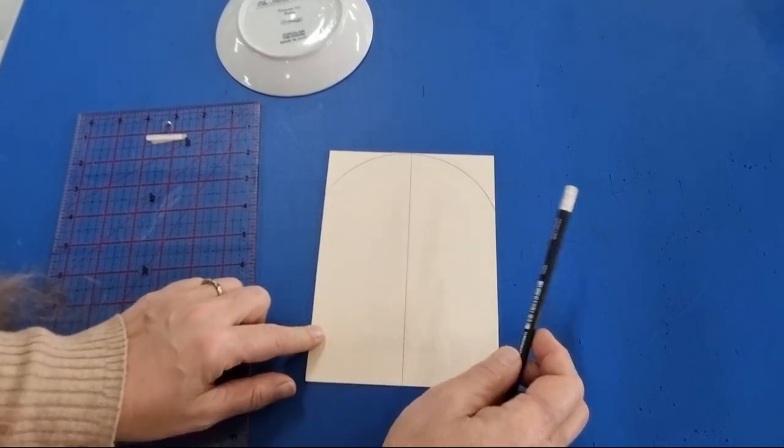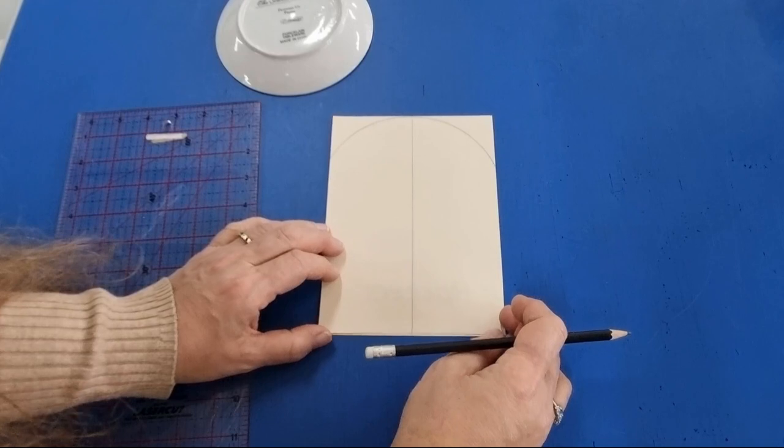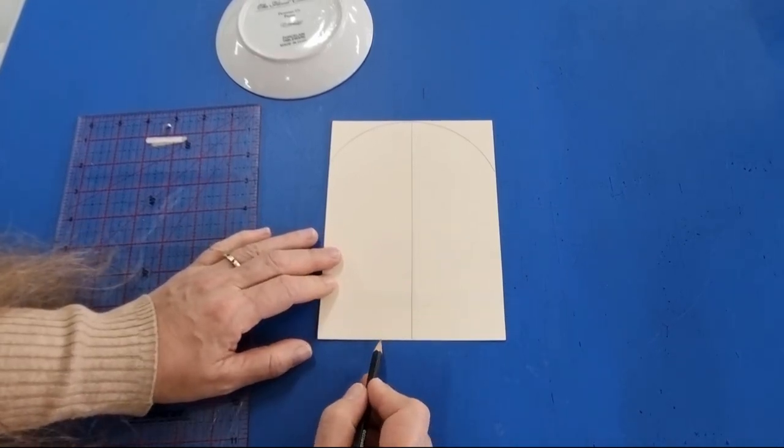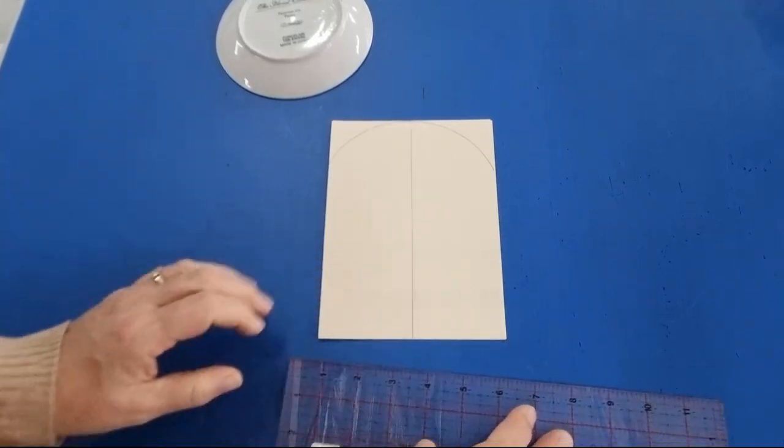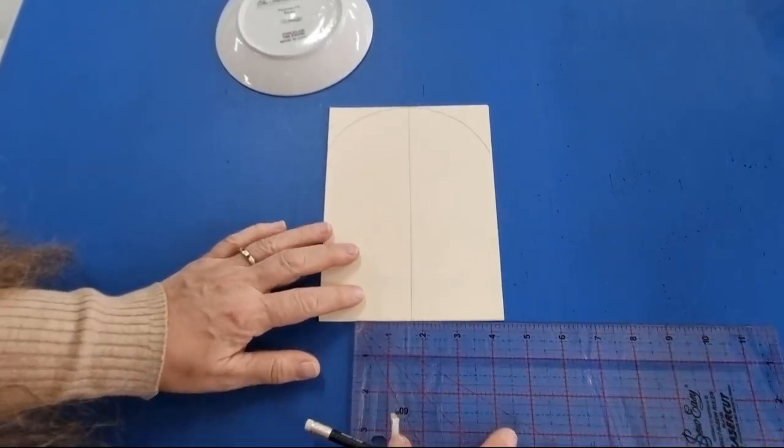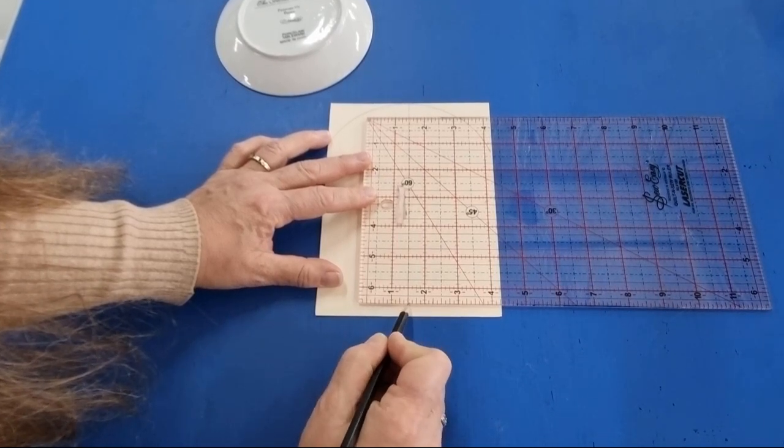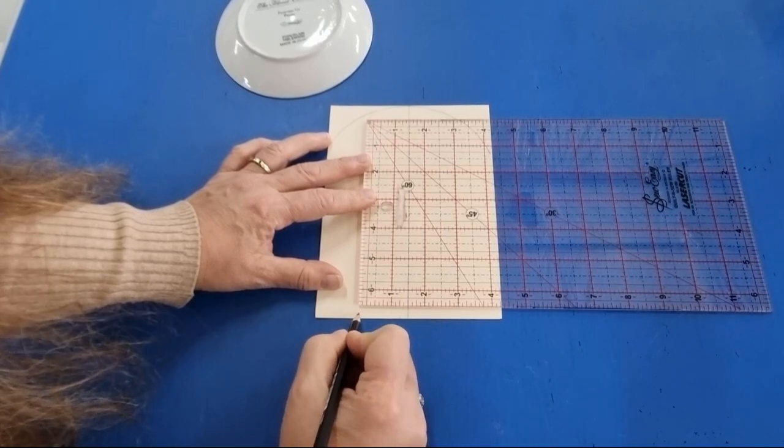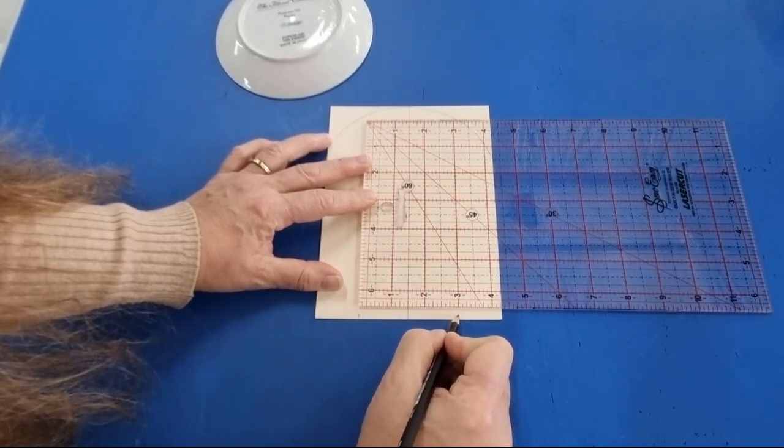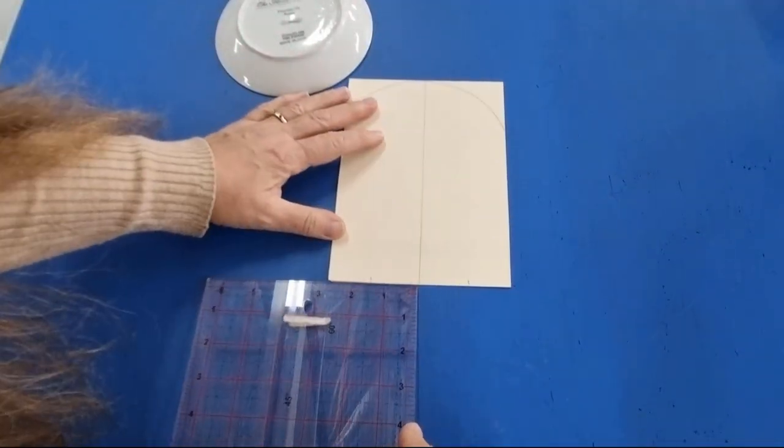So we've got our half circle or arc there. At the bottom, we want to come out and measure three inches all up. So from the center line, we're just going to measure one and a half inches to the center line, and then one and a half inches out there. That will measure three inches across.